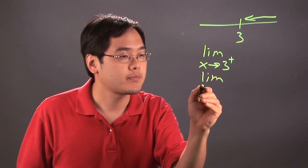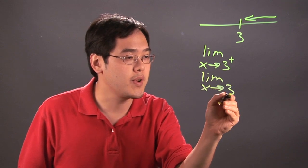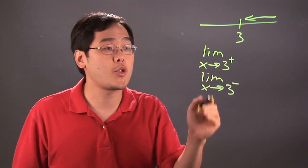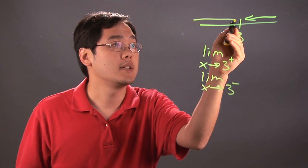On the flip side, you have x approaches 3 with a negative sign over there. That means you're approaching 3 from the left-hand side.